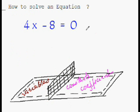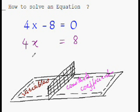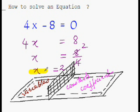Let's start the game. Take minus 8 to the other side — since the operation is minus, it becomes plus 8. Now the coefficient 4 is being multiplied with x, so when it goes to the other side it gets divided: x equals 8 over 4. Since 4 times 2 is 8, x equals 2, and the equation is solved.